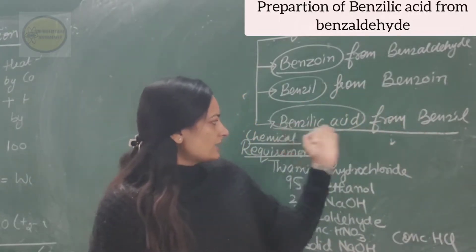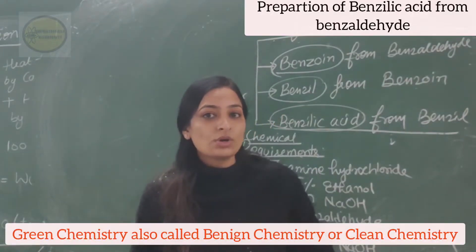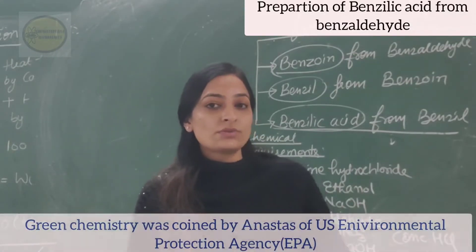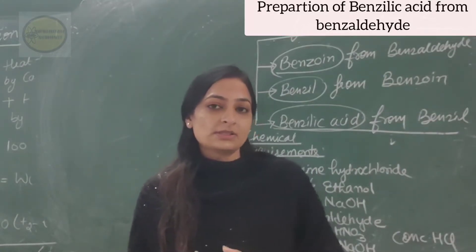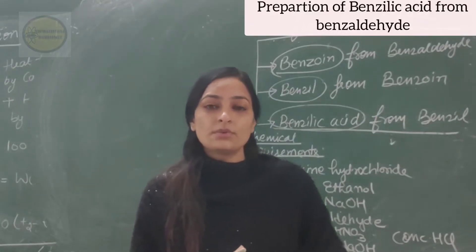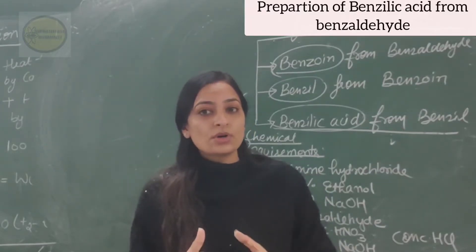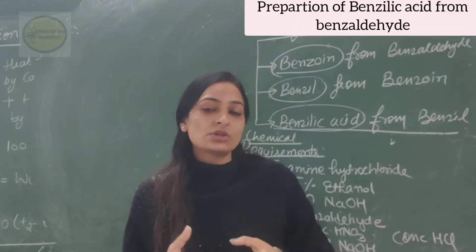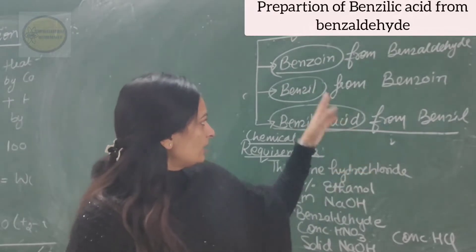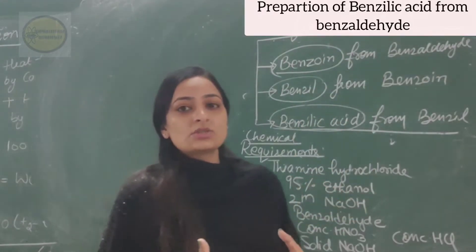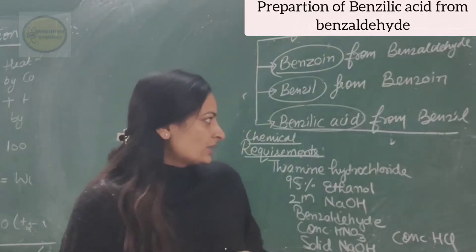The last step — the preparation of benzilic acid from benzil — is in accordance with green chemistry. Green chemistry, also called clean chemistry, is a term given by Anastas of the United States Environmental Protection Agency. According to green chemistry, we need to follow 12 principles. The approach is basically to opt for synthetic procedures and products which are environmentally friendly and reduce health risks. In this step we are not going to use any solvent, since green chemistry requires us to avoid solvent use as much as possible.